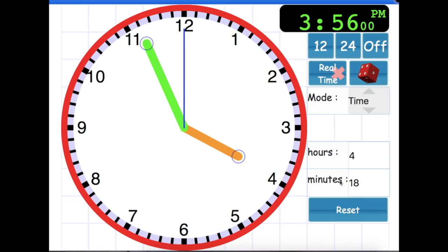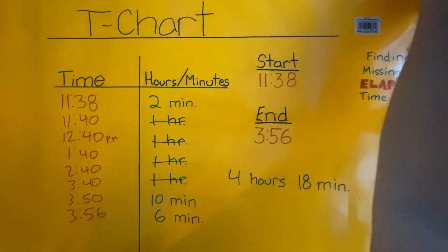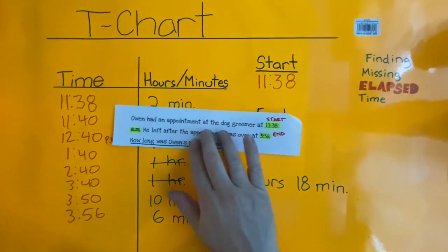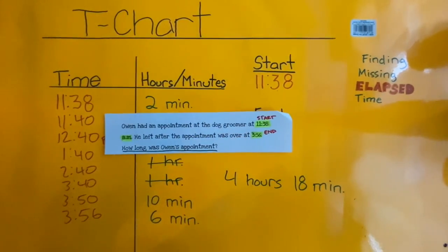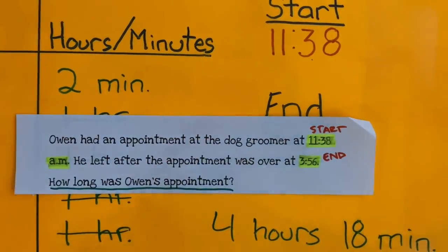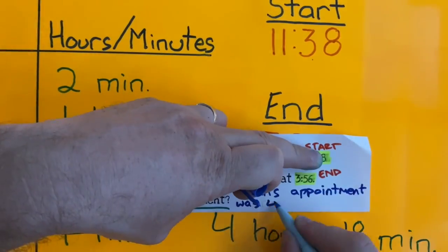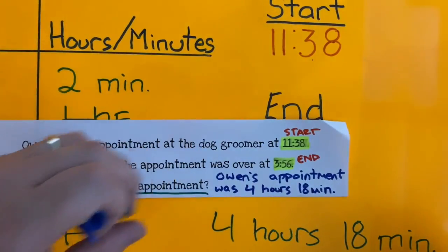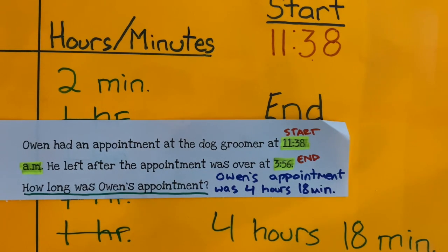Going back to our tools here, we can see that our elapsed time shows that we did it correct — there are 4 hours, 18 minutes. Now we can go and answer the question: Owen's appointment was 4 hours, 18 minutes.